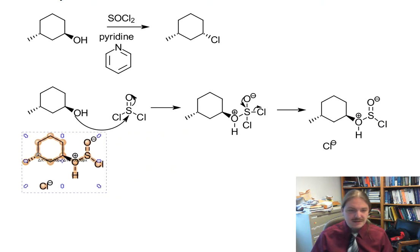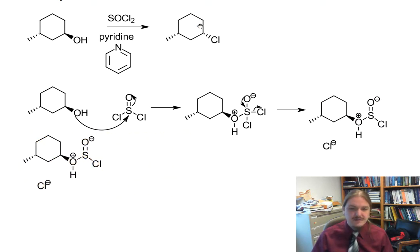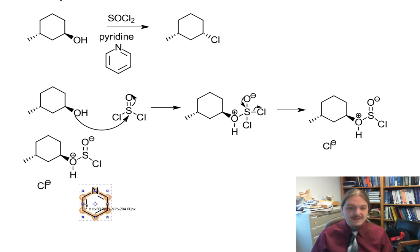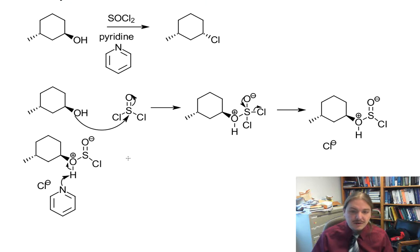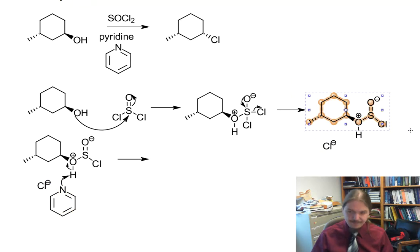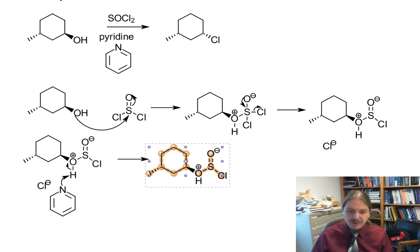Before that happens, we have this extra proton to get rid of. We use pyridine for this — or whichever base you have. Pyridine has an electron pair on nitrogen, grabs the hydrogen, and the electrons in the oxygen-hydrogen bond go up to oxygen. Pretty straightforward proton transfer here.